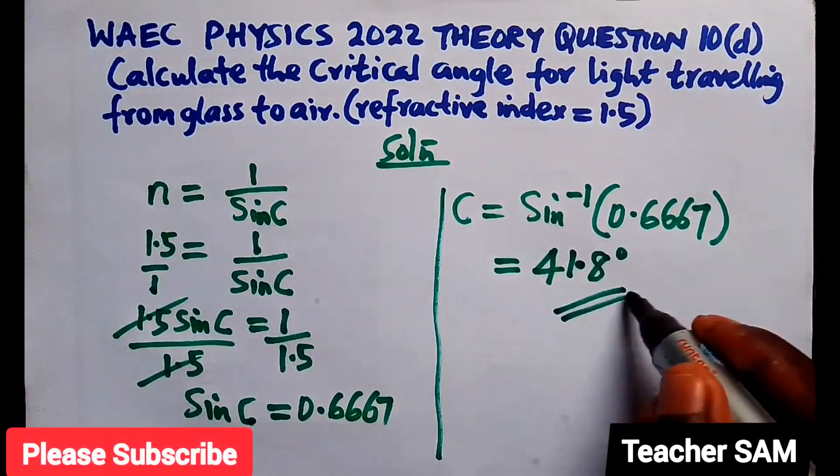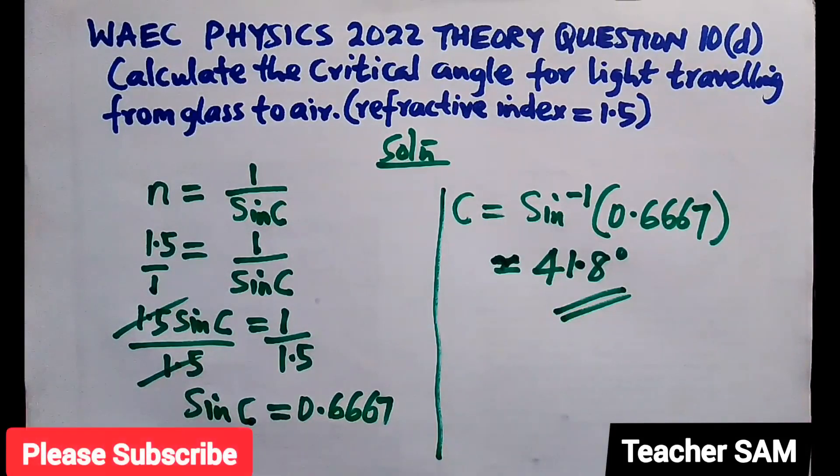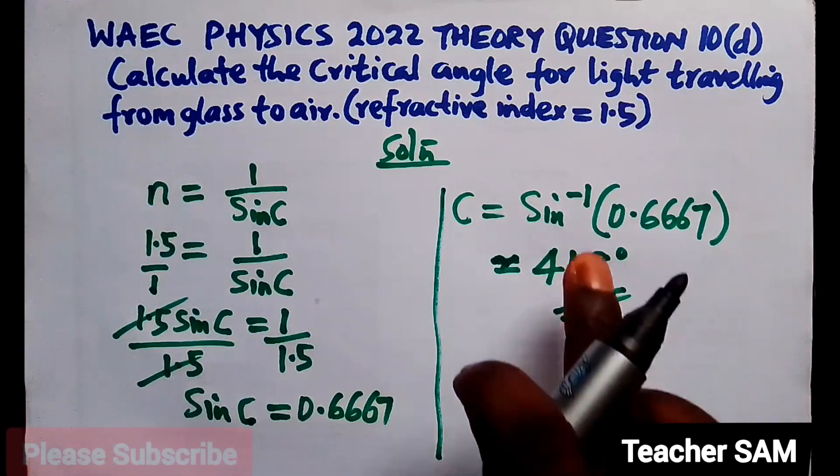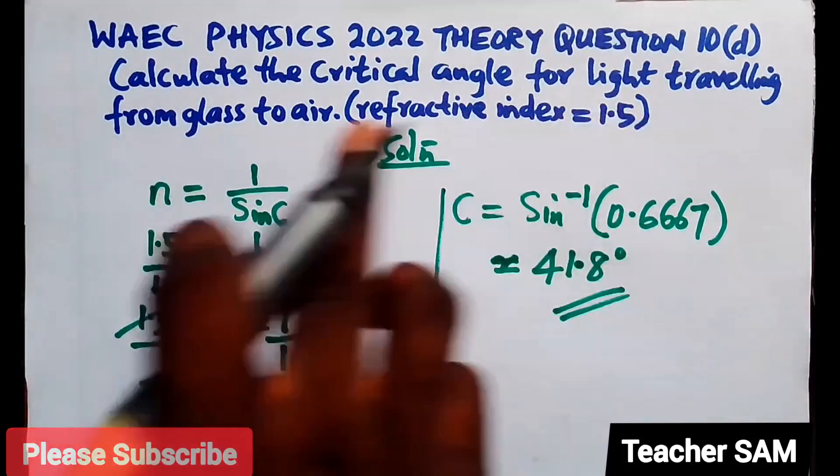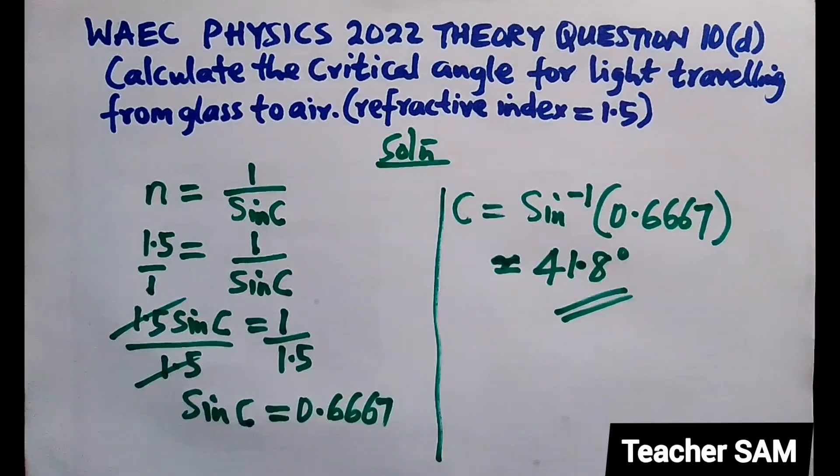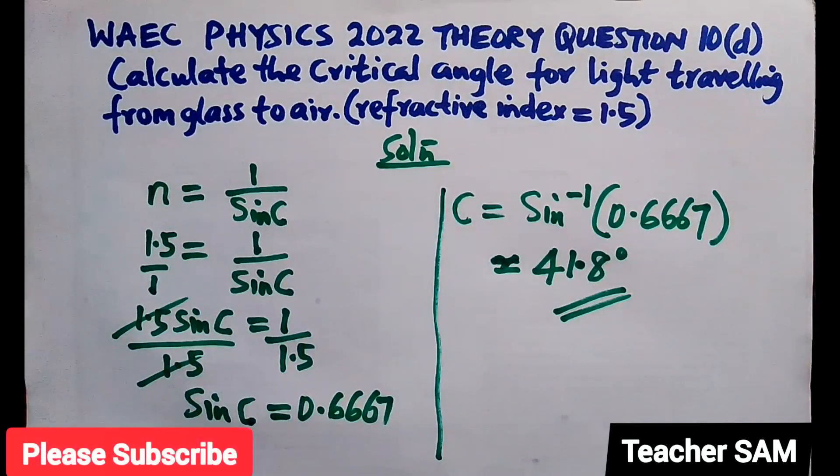Traveling from glass to air with a refractive index of 1.5. That is the answer to this question.